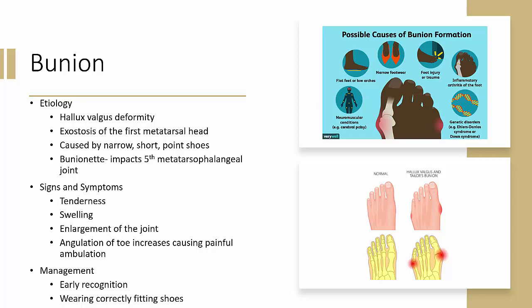For bunions or bunionettes, signs and symptoms include tenderness, swelling, and enlargement of the joint. As inflammation continues, the angulation increases, causing painful walking, running, or movement. Tendinitis in the great toe flexors may also develop. Management includes early recognition, correctly fitting shoes, appropriate orthotics, padding over the first or fifth metatarsophalangeal joint, tape splints between the first and second toes, and intrinsic/extrinsic foot strengthening exercises. A bunionectomy may be necessary if the condition persists.